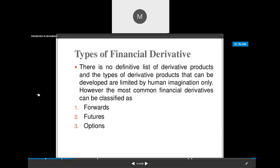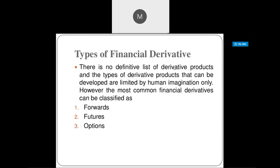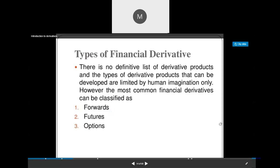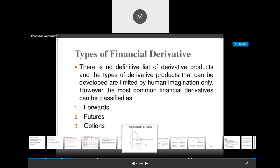The first type is a forward contract, then future contract, and option contract. One more contract is swap contract, but that is not in our syllabus — it is used in international business. As per the syllabus, we have only three types of financial derivatives: forward, future, and option contract. We'll see what exactly forward contract, future contract, and option contract are in detail.